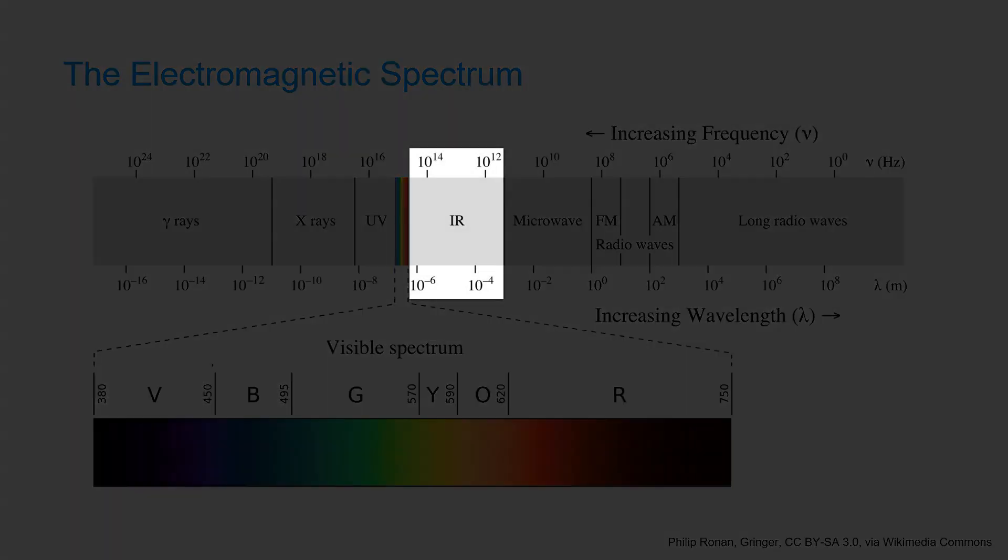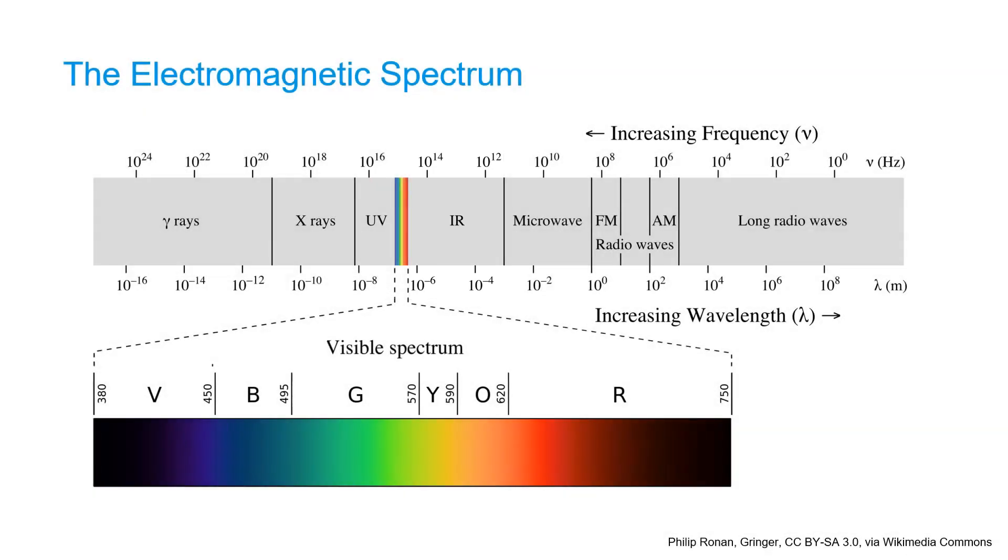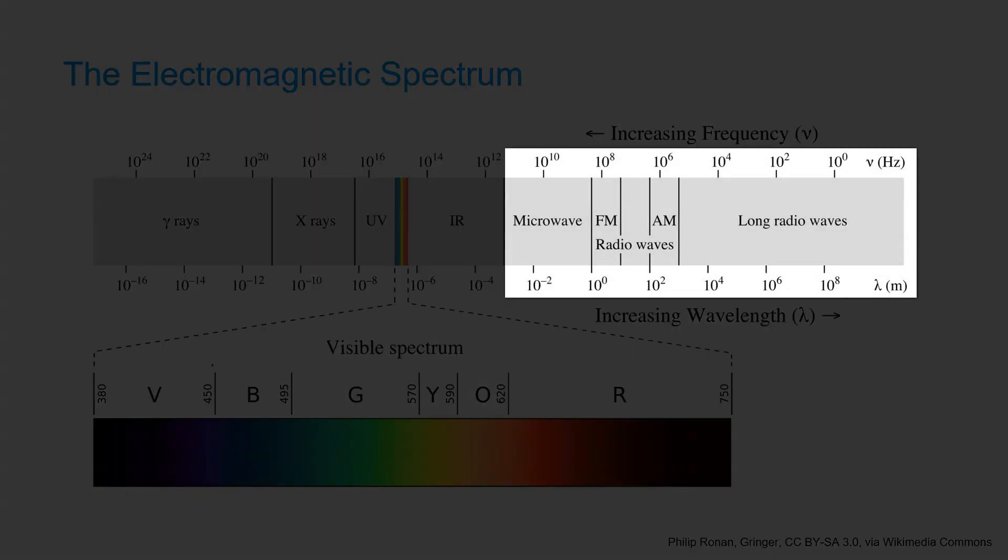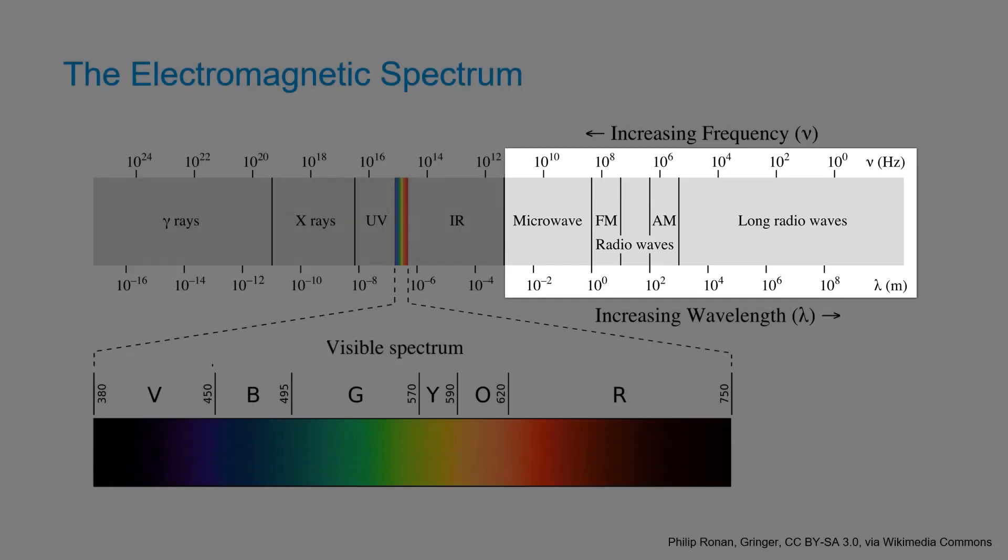A bit further to the right we find the infrared which can be split in the near infrared which is mostly reflection from healthy vegetation. Then we have the short wave infrared and the right side of the infrared part of the spectrum is the thermal infrared which is the objective of this lecture. Further to the right we find useful wavelengths for human purposes such as microwave and the radio waves. Also wi-fi and mobile phone communication is in this part of the spectrum.